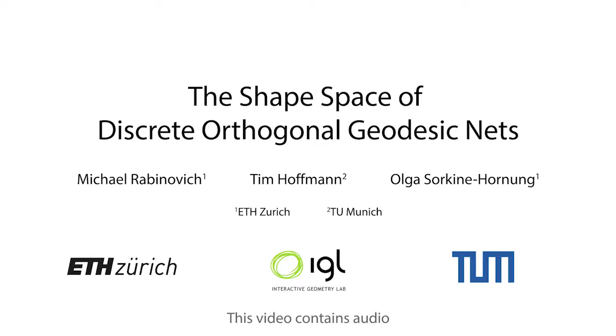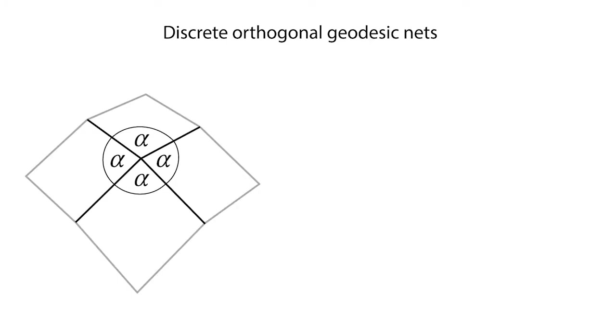We present a theory and a set of tools for shape-space exploration of a class of discrete developable surfaces, known as discrete orthogonal geodesic nets, or DOGS. DOG nets are a quad-mesh analog of developable surfaces defined by simple local angle constraints where all angles around a vertex are equal.